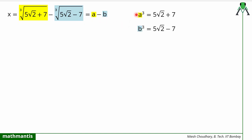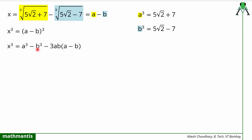The next step: since I know a³ and b³, I will try to generate them. I will set x = a - b and take the cube of both sides. x³ = (a - b)³, and using the formula (a - b)³ = a³ - b³ - 3ab(a - b), this will generate a³ - b³.